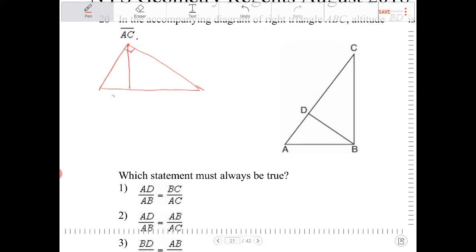partitioning the hypotenuse into two segments, the relationship between the two partitions and the length of the altitude can be expressed in this manner. The product of the partitions will equal the altitude squared.